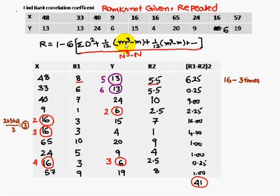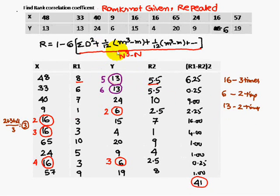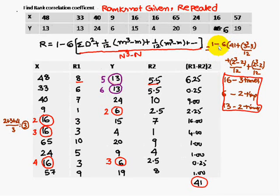Next we find the m values. The value 16 is repeated 3 times, so m = 3. We also have values repeated 2 times, giving additional m = 2 terms. We substitute: sigma d square = 41, and for 16 repeated 3 times we write (3³ − 3)/12.